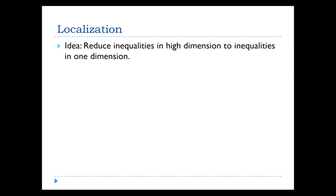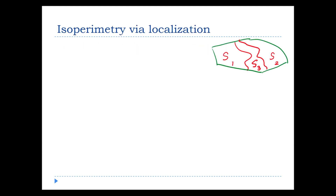So the first idea is localization. And the idea is very simple. We want to prove these high-dimensional inequalities. The Cheeger constant is at least something — an integral over the boundary, integral over the set — comparison of integrals of two functions. We'll reduce it to a problem in one dimension. I will walk you through this technique using one example, one of the first and simpler inequalities, which is that the isoperimetric ratio is at least 2 over D.